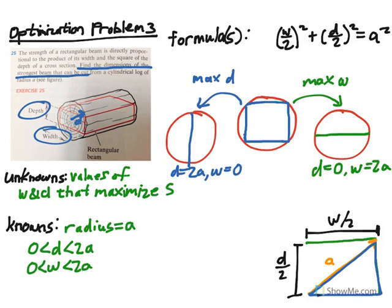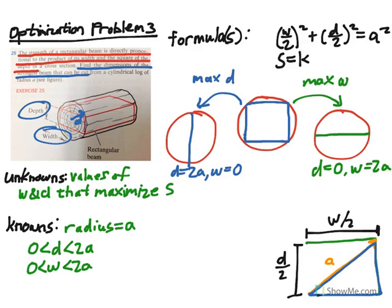They stated that the strength of a rectangular beam is directly proportional to the product of its width and the square of its depth. So our formula is: strength equals some proportionality constant K times width times depth squared — S = K·W·D². You must include a proportionality constant whenever setting up a proportion. This formula spells 'KWD-squared,' which ironically spells 'squid.'